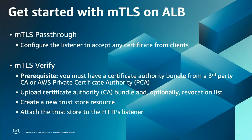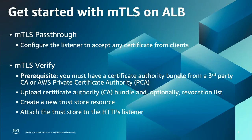So how to get started with mutual TLS on ALB? There are different steps depending on the mTLS mode you choose. For pass-through, you just need to configure the listener with this option and the ALB will start sending the certificate to the backend. For verify mode, you first need to have the certificate bundle ready from a third-party certificate authority or AWS Private Certificate Authority. Then upload the certificate bundle to an S3 bucket. You can also optionally upload a revocation list if needed. Then you will create a trust store with the S3 path and attach the trust store to the HTTPS listener of the ALB. Note that you can create the trust store during the creation of an ALB or a new listener on an existing ALB and it gets attached automatically. But if you want to add mutual TLS to an existing listener, you need to create the trust store first under the EC2 console and then attach it to the existing HTTPS listener.